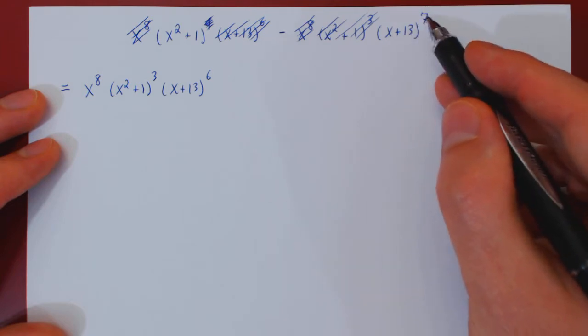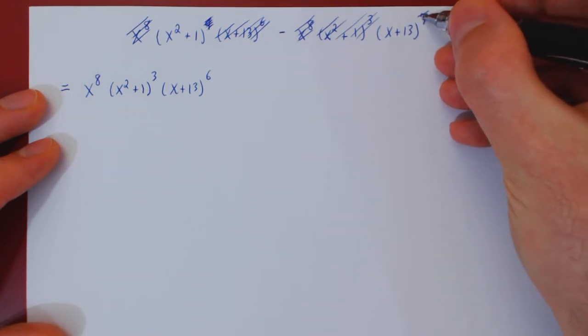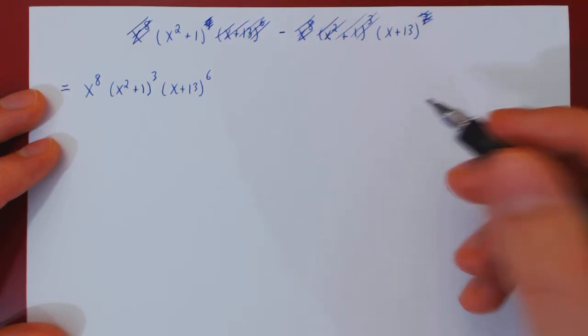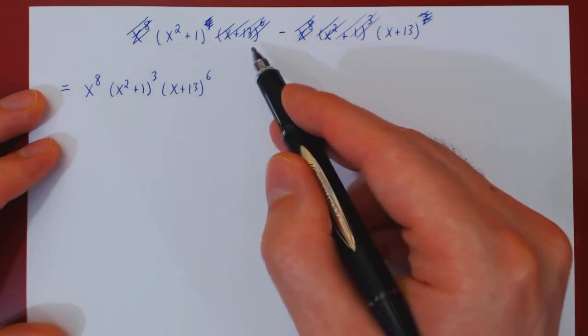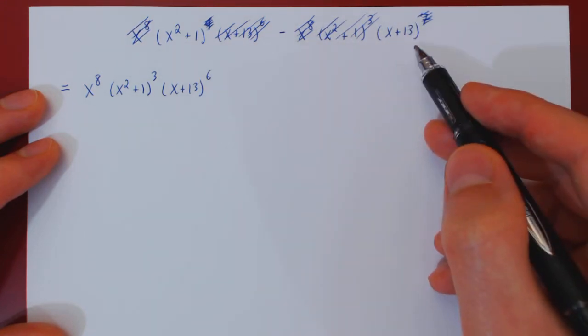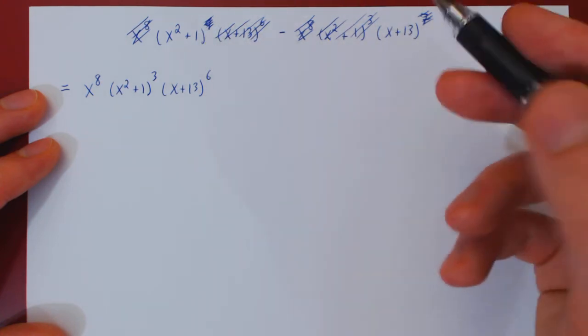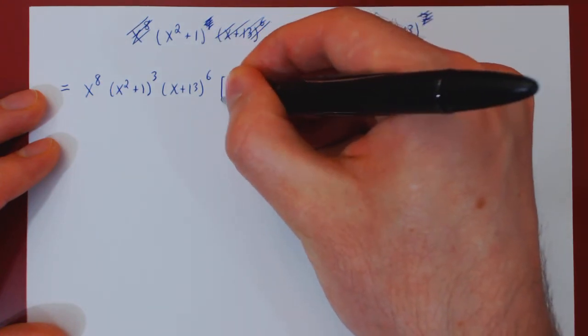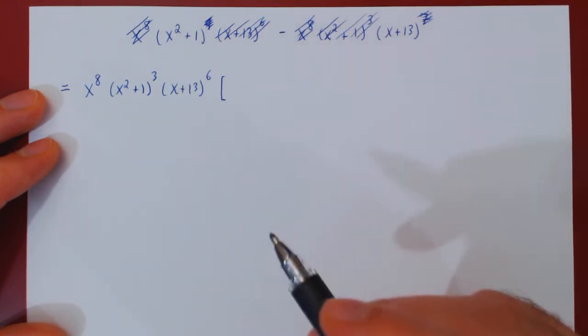In the second, there were 7 of those factors. We only took away 6, so there's 1 left over. So there's a single x squared plus 1 left over in the first term, and a single x plus 13 left over in the second term. Well, clearly now, the first and second term no longer have common factors, so we can open up our brackets and write the remaining terms.